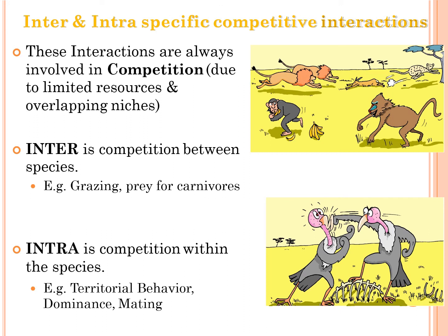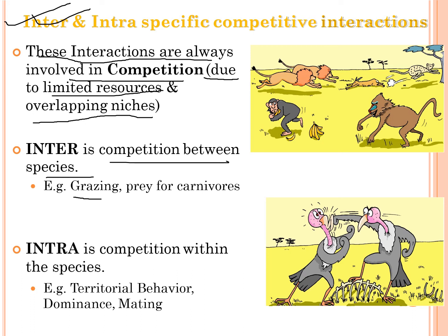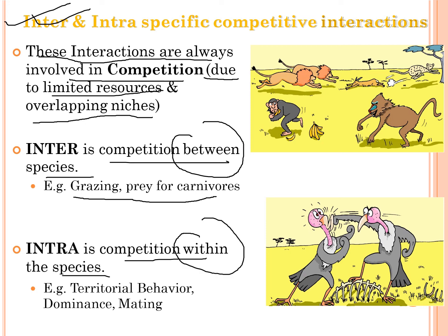Inter- and intra-specific competitions fall under negative interactions. They are caused by two reasons: limited resources and overlapping niches. Inter-specific competition is competition between species — examples include grazing or prey for carnivores. Intra-specific competition is competition within a species, with examples such as territorial behavior, dominance, and mating.